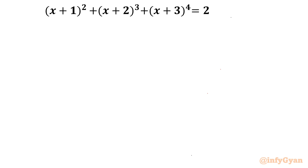Hello friends, welcome to Infujaan. Once again in this very exciting algebraic challenging equation, we are going to solve one interesting polynomial equation for four solutions. The equation is (x+1)² + (x+2)³ + (x+3)⁴ = 2. While solving this, we will use algebraic identities, Pascal's triangle method, algebraic manipulation, and the quadratic formula. So let's get started.